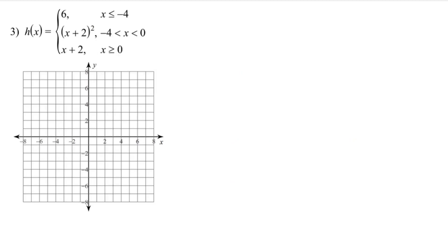Now let's graph a piecewise function with three pieces. The first piece is just a horizontal line, and that's defined for x's less than or equal to negative 4. Because we have the or equal to, this point is defined at 6.